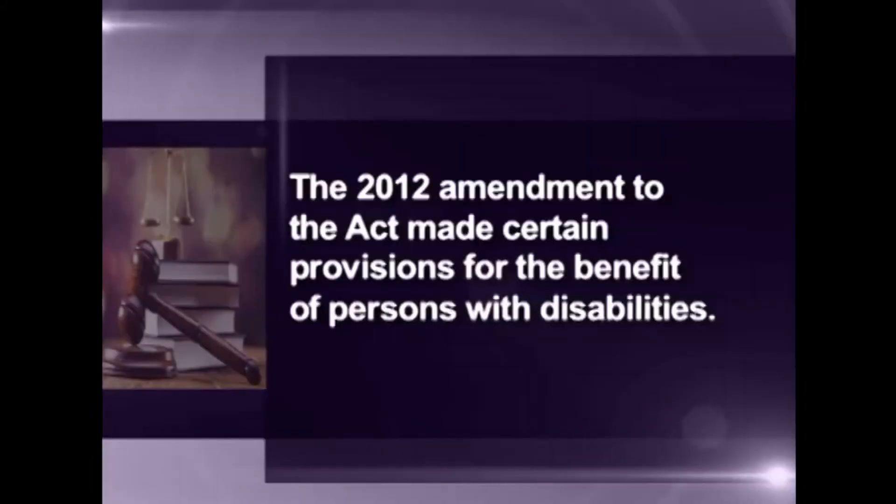The 2012 amendment to the Act made certain provisions for the benefit of persons with disabilities. The new Section 52, clause 1, sub-clause ZB facilitates access to copyrighted works by persons with disabilities, provided that the reproduction of accessible formats is on a non-profit basis — to recover only the cost of production — the organization ensures that accessible copies are used only by persons with disabilities, and takes reasonable steps to prevent the entry of accessible copies into ordinary channels of business.